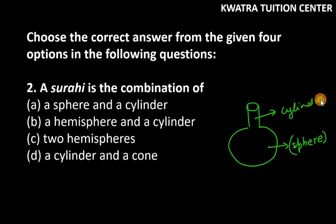So the right option is part (a) — a sphere and a cylinder. This is the answer for question number two.